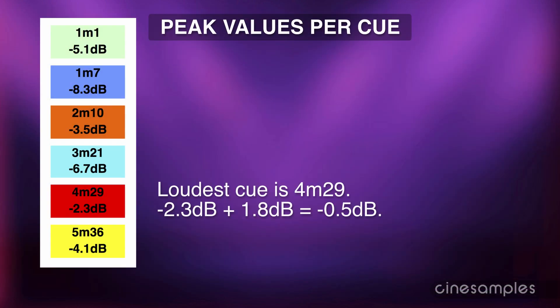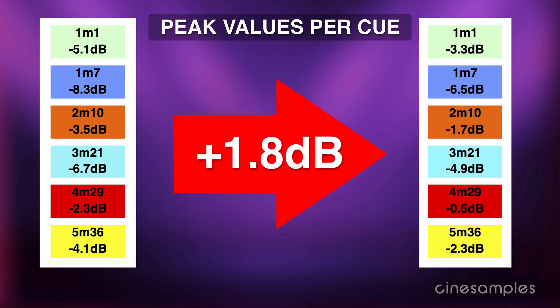If the piece of music happens to be one cue within a film score, then the stems of the loudest cue must be adjusted so its loudest part rises as close to 0 dB as possible without going over. Then all subsequent cues must receive the same volume adjustment in order to maintain a consistent relative volume throughout the score.